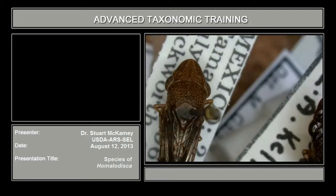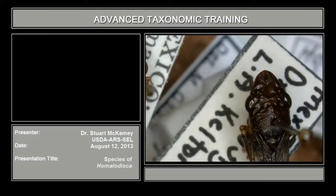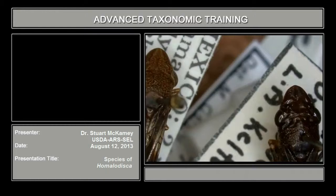The first two are Homalodisca vitripennis, the glassy-winged sharpshooter, which is found in the USA, and Homalodisca ichthyocephala, which is found in Mexico, and they overlap distributions in Mexico.